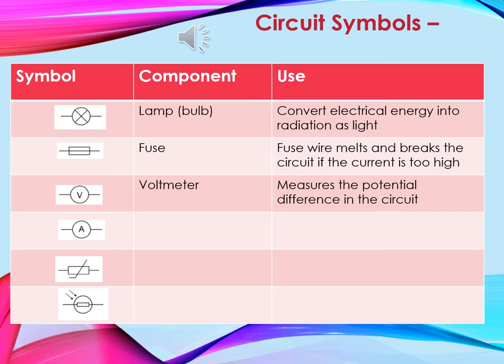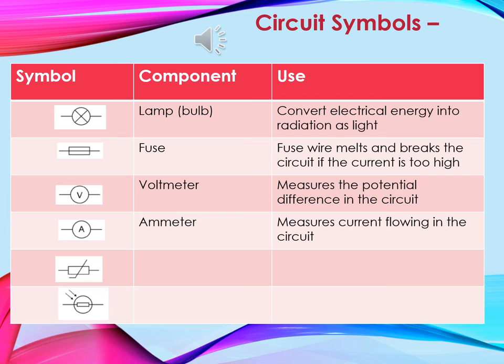Then we have a voltmeter. Voltmeters measure the potential difference in a circuit. Remember, a voltmeter has to go in parallel in order for it to work. And then we have an ammeter. An ammeter measures the current flowing in a circuit.